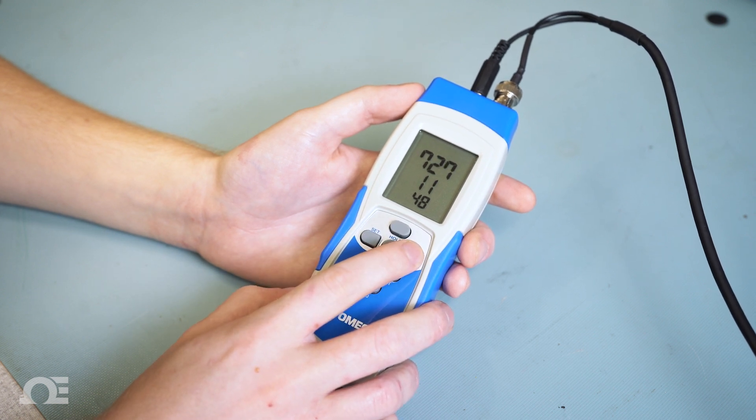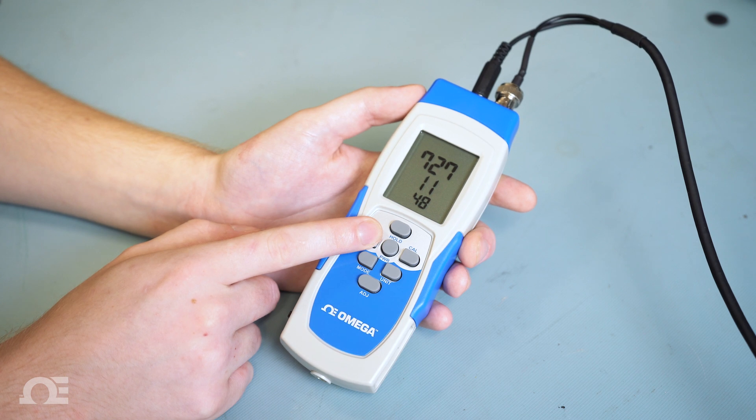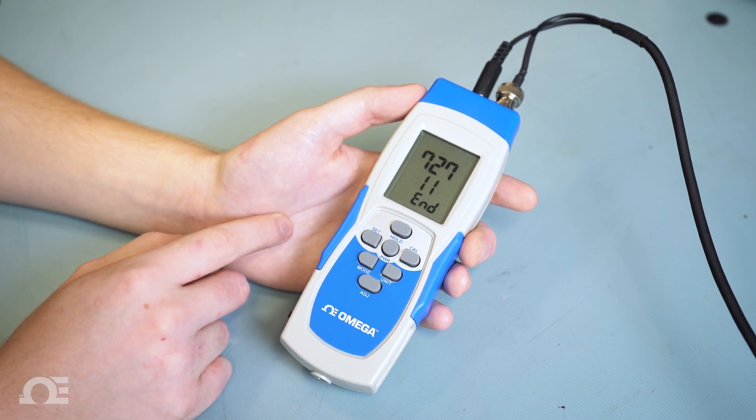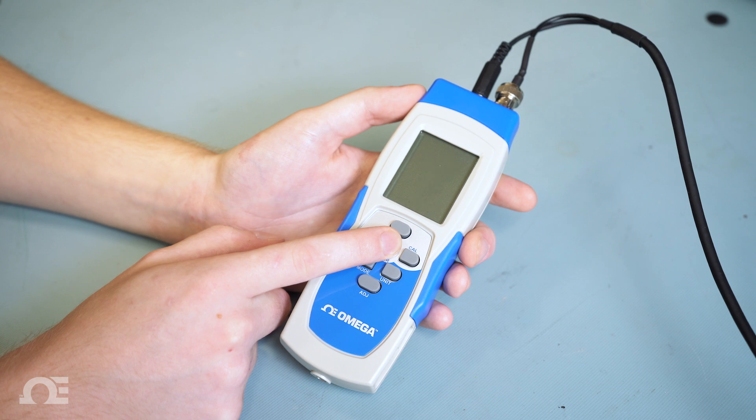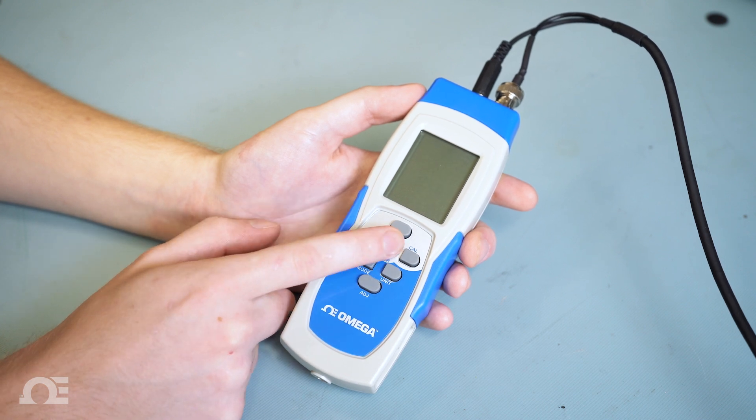With all fields set, press and hold the set key until SA appears on the bottom of the screen. Turn off the unit by pressing the power button, then turn it back on.